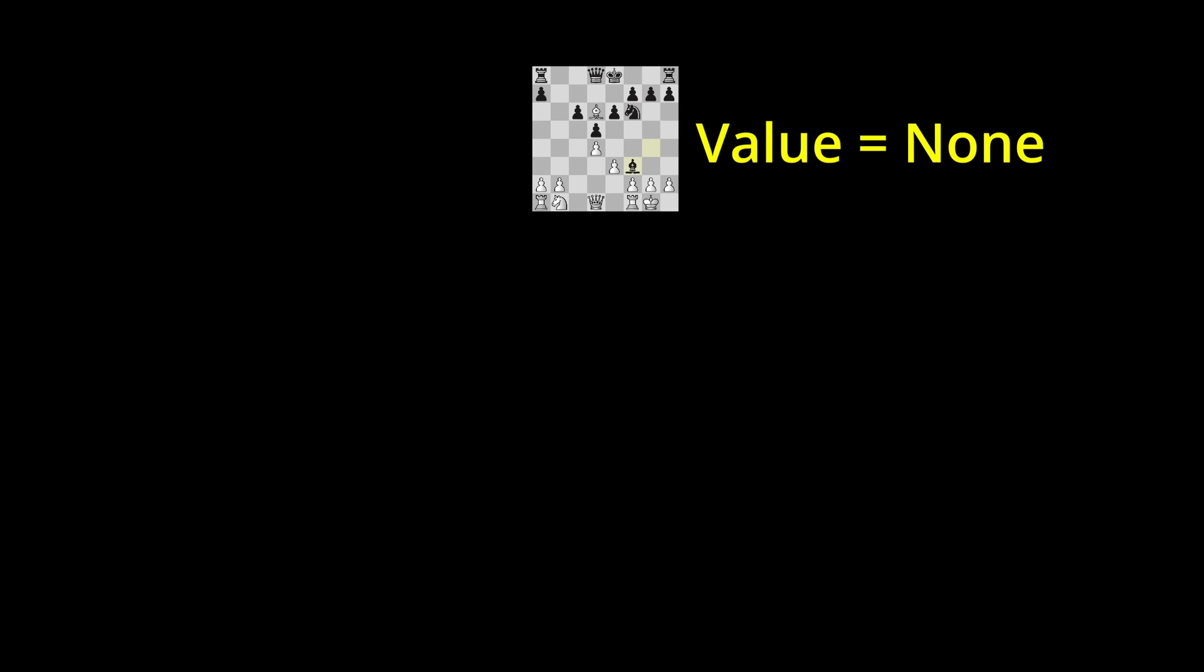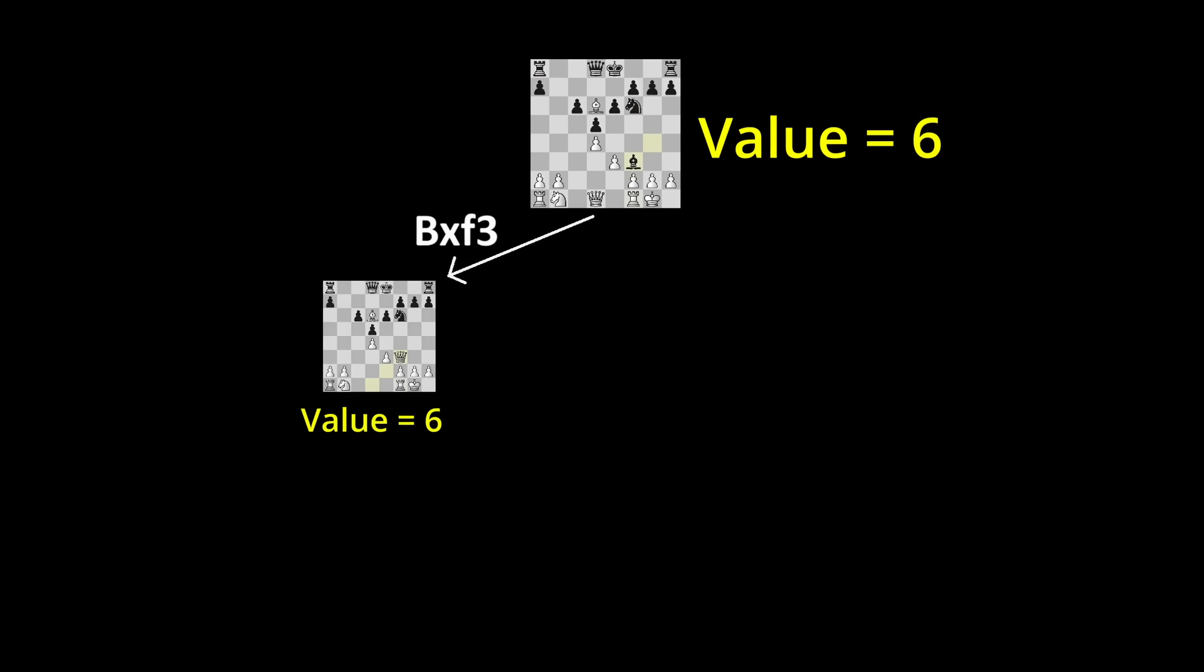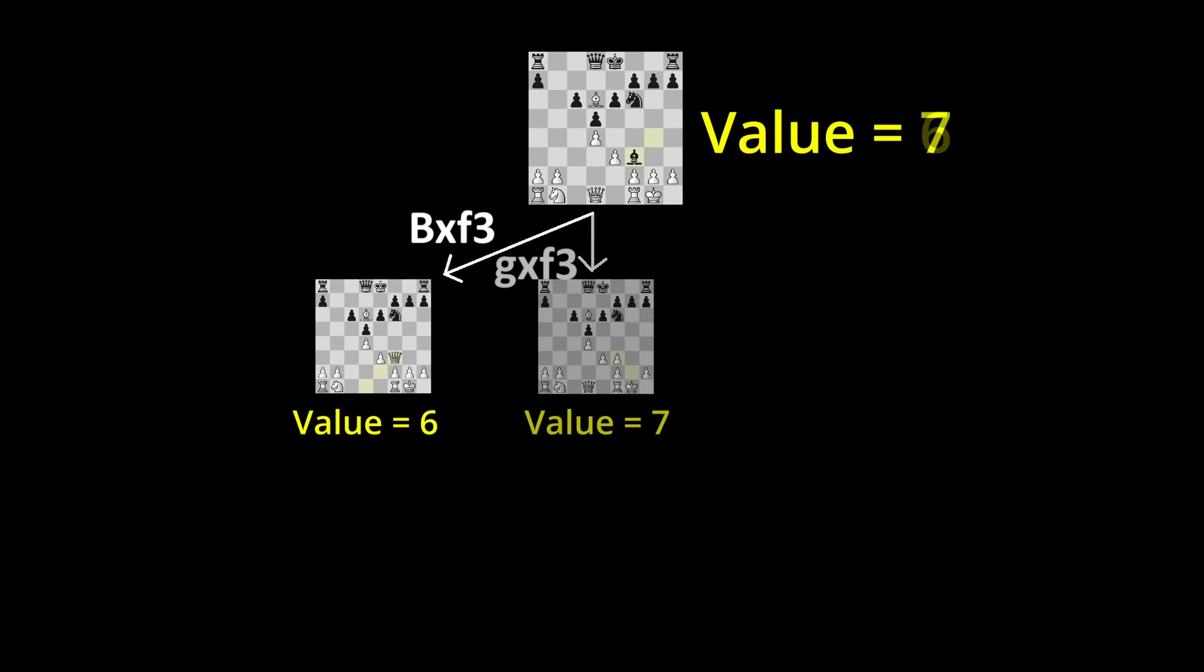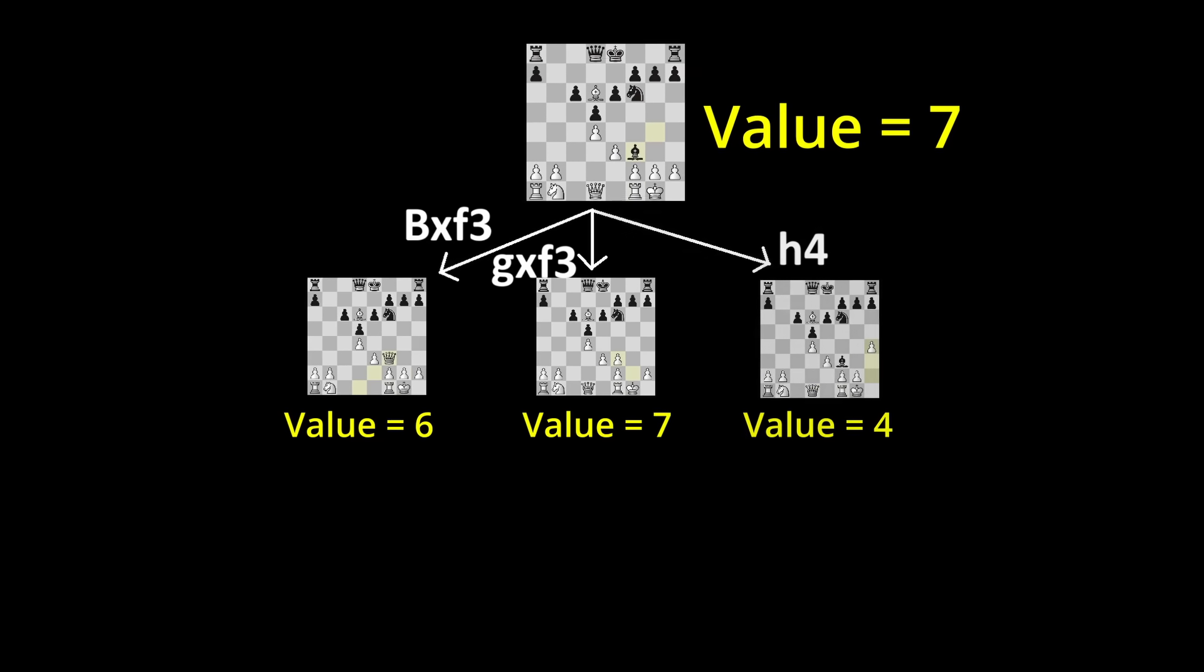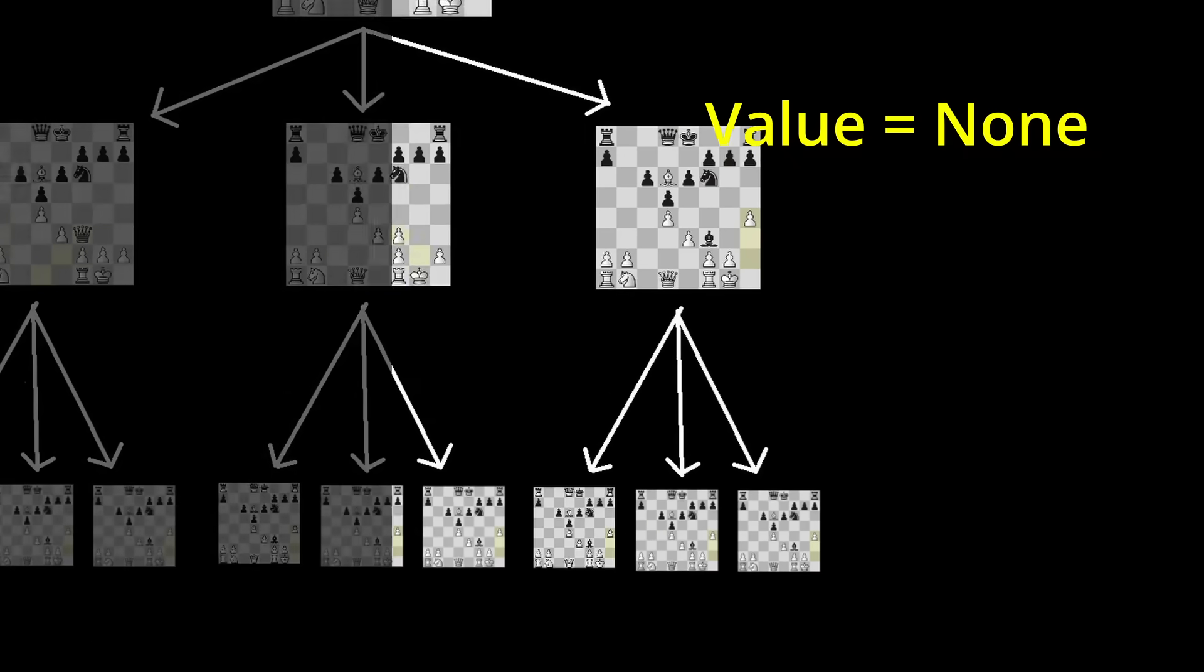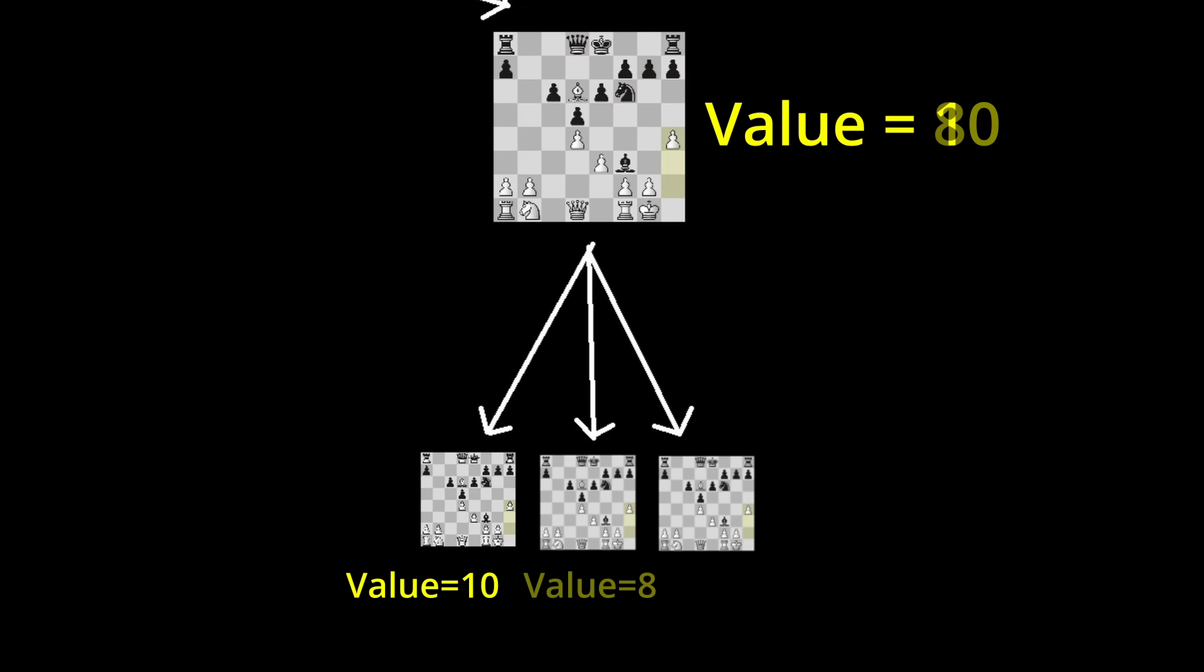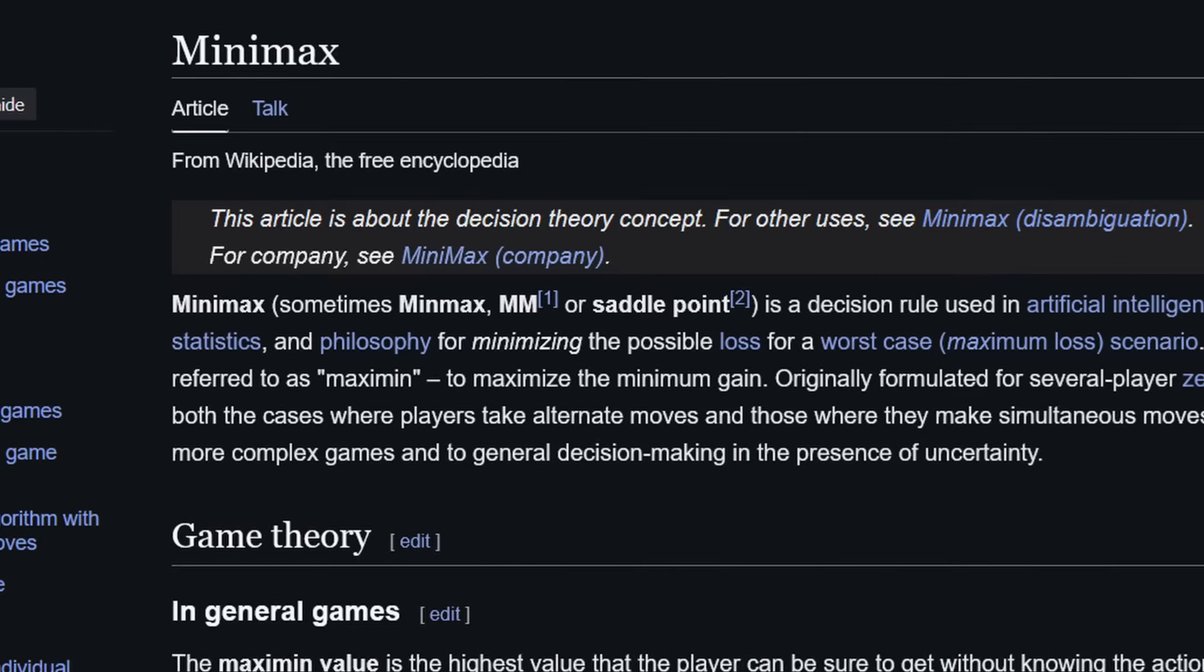Then as Stockfish searches, it calculates a dynamic score for each position based on the maximum value you can get from each move, but when it's the opponent's turn, it picks the move that minimizes the score because it knows the opponent wants it to lose. This is called Minimax.